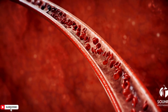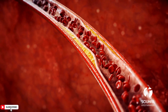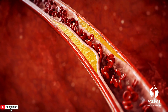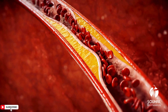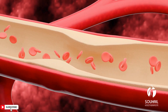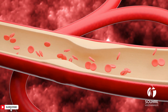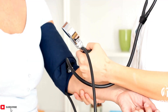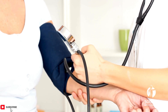Causes: Atherosclerosis. The primary cause of coronary artery disease is the build-up of plaques made of fat, cholesterol, and other substances in the coronary arteries, forming atherosclerotic plaques. Risk factors: Certain risk factors increase the likelihood of developing coronary artery disease, including smoking, high blood pressure, diabetes, obesity, high cholesterol levels, and a genetic predisposition.